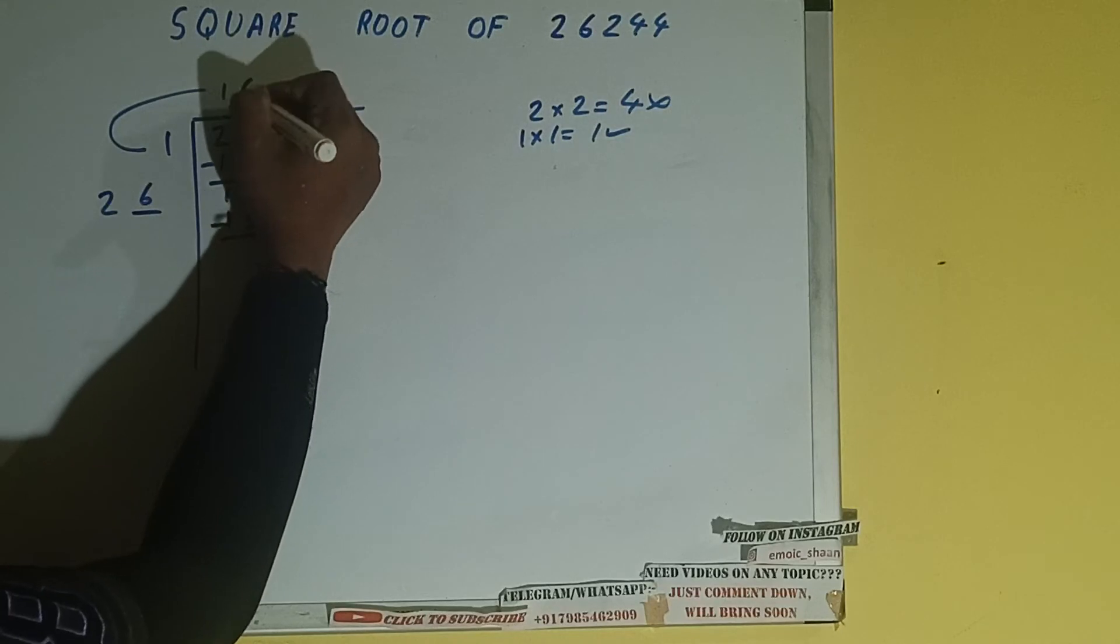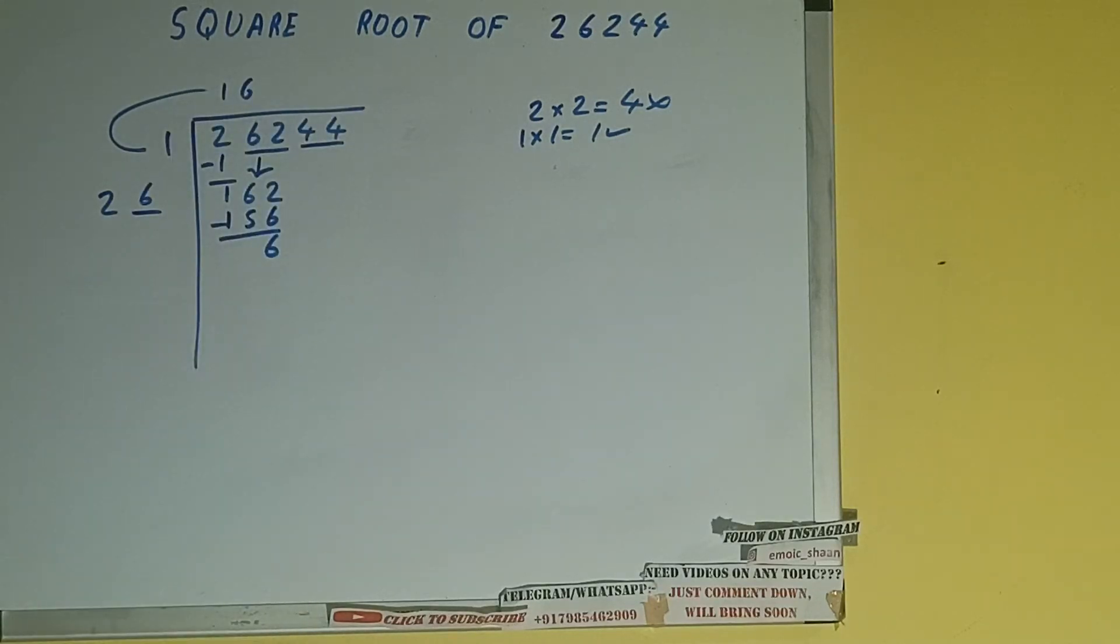So let's take it. And on subtraction, 6 will be left. Sorry, we forgot to write 6 here and 6 here. Okay, now 26 into 6 we did, so add both. So 26 plus 6 will be 32.